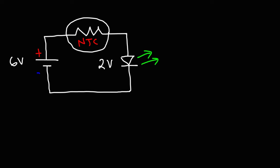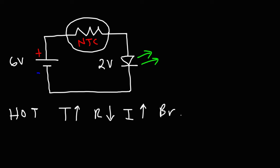Here is a simple way to employ the NTC thermistor as a temperature sensor. In a circuit, we have a 6-volt battery connected across an NTC thermistor and a green LED, which has a voltage drop of approximately 2 volts. If we place the temperature sensor in a hot environment, the temperature of the thermistor goes up. Being an NTC thermistor, when the temperature goes up, the resistance goes down. As the resistance decreases at constant voltage, the current flowing in the circuit increases, and as the current in the LED increases, the brightness of the LED goes up.